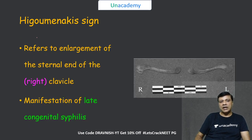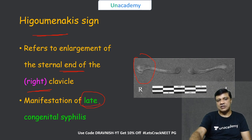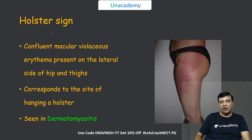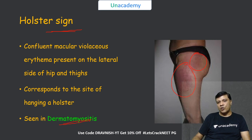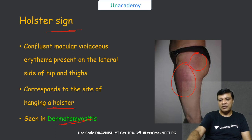The Higoumenakis sign refers to enlargement of the sternoclavicular end of the clavicle, usually the right side, and is a manifestation of late congenital syphilis. The holster sign is a feature of dermatomyositis, characterized by confluent macular violaceous erythema over the hips and thighs — the sites where a revolver holster is worn.